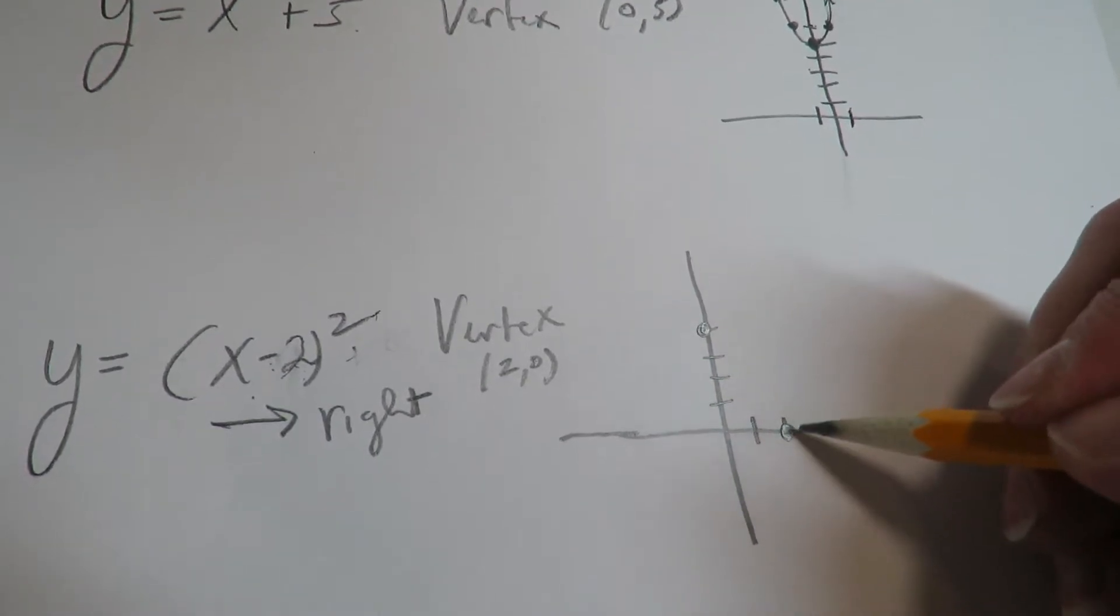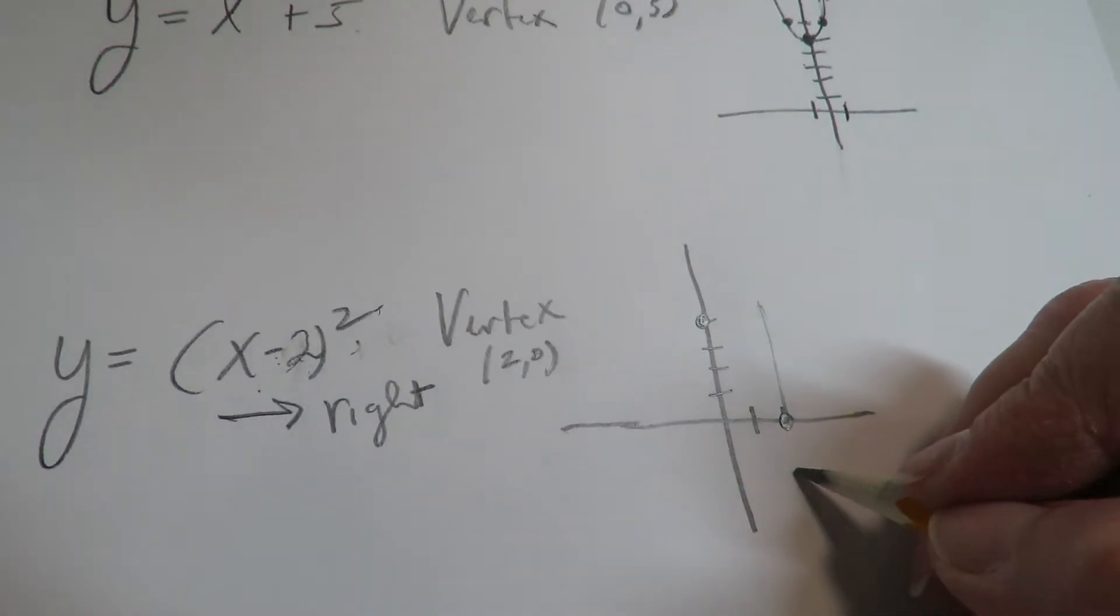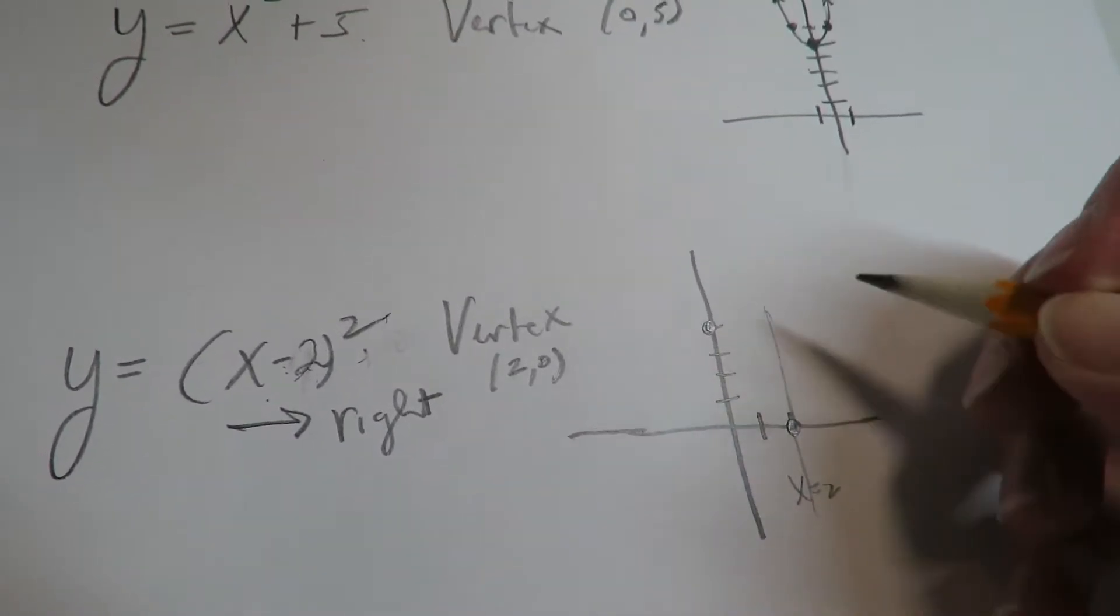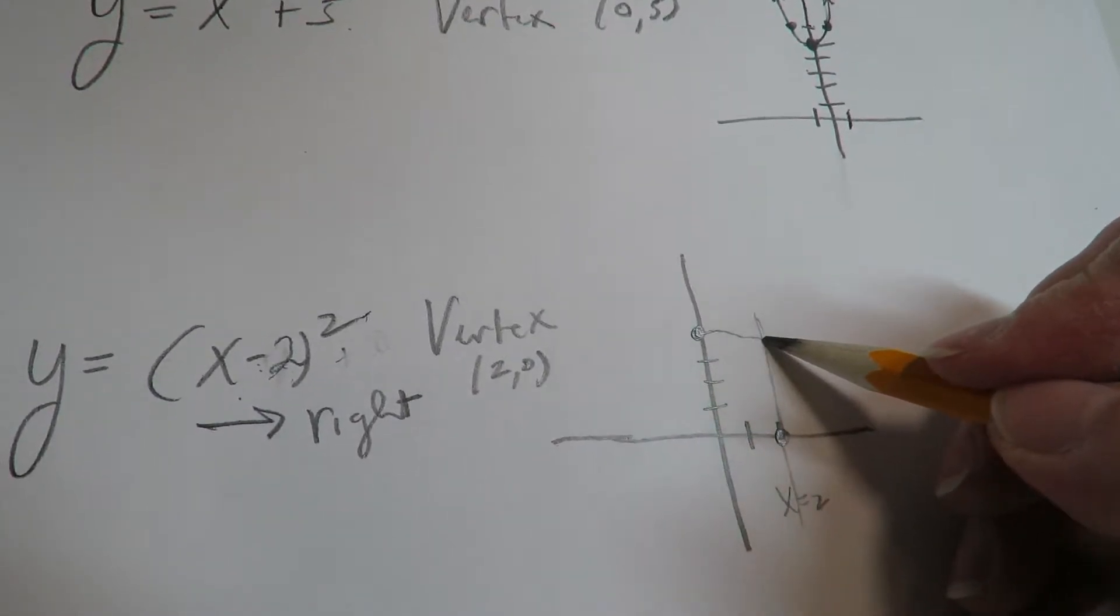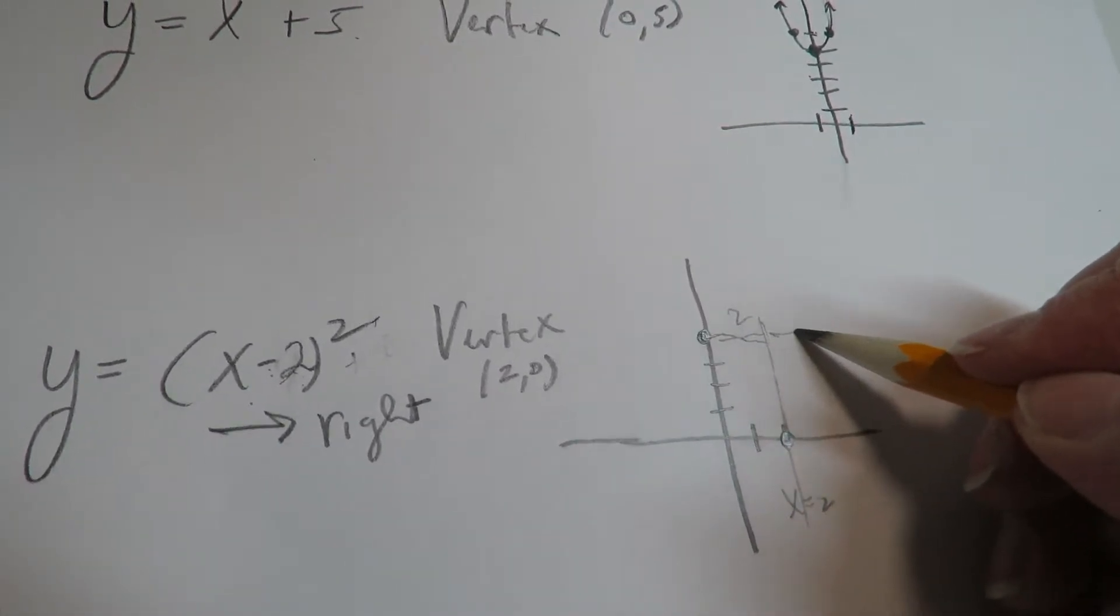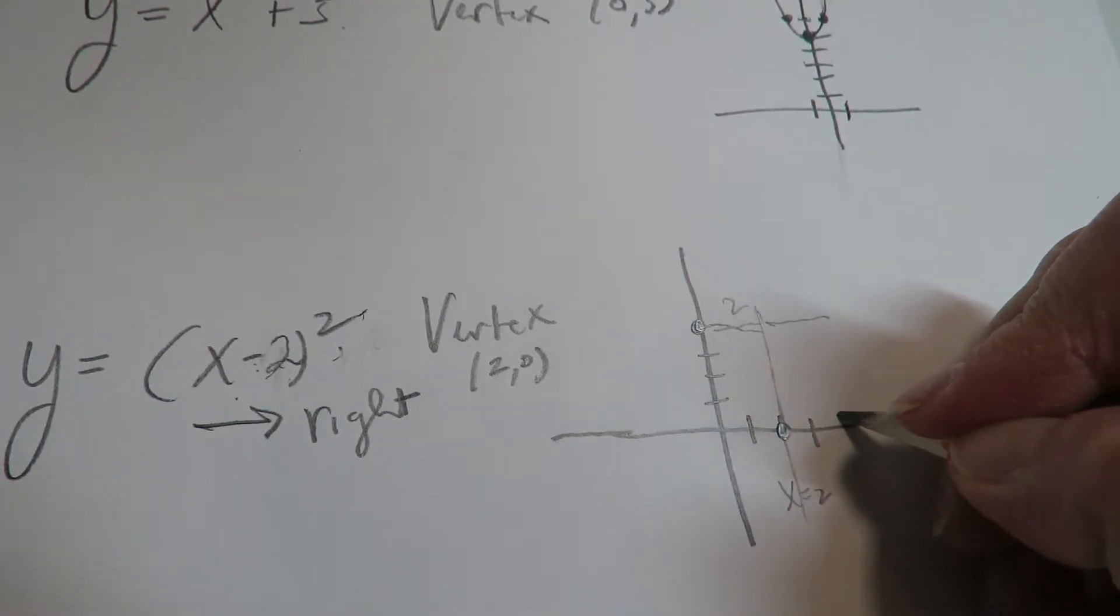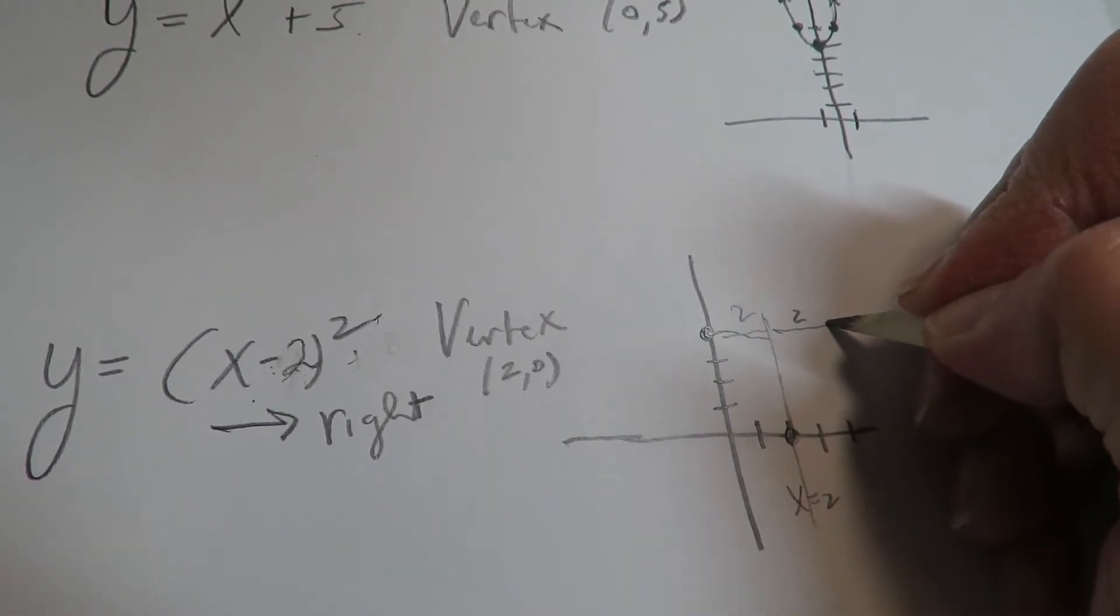And then if I do like a point by symmetry, so if this is the axis of symmetry at x equals 2, the axis of symmetry, and this is 2 units away on this side. So then if I go 2 units away on the other side, and I'm at 4,